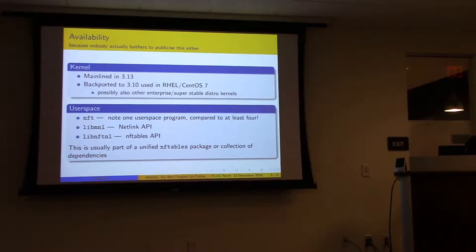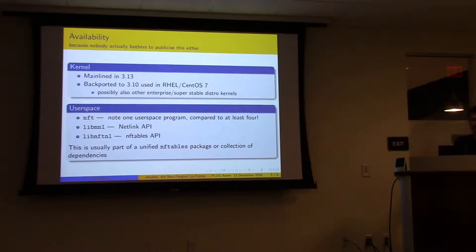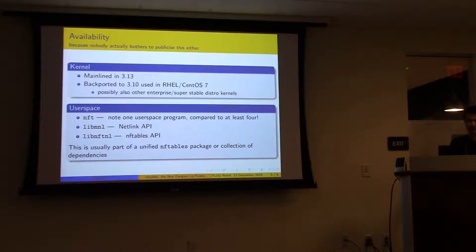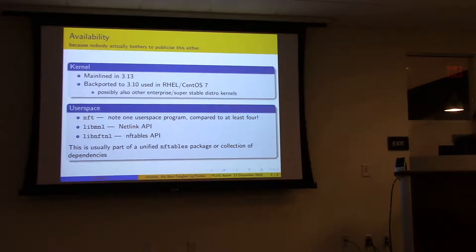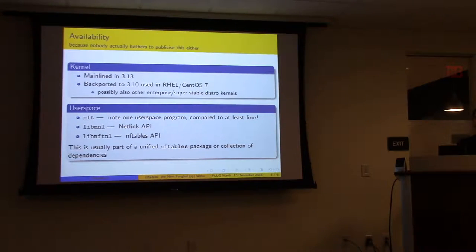Q: Is there anything that iptables can do that NFTables can't yet? A: It's pretty feature-complete at this point. Looking at the details, it's mostly just order-of-operations stuff and certain ways of deleting rules they haven't implemented yet. The non-linear expression evaluation hasn't been implemented yet either. But feature-wise for processing packets and rules, it's pretty much feature complete. 3.18 was when it really became usable.